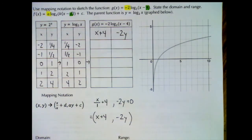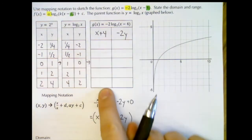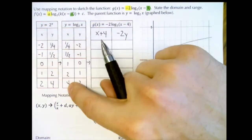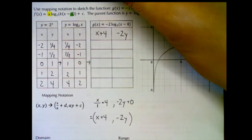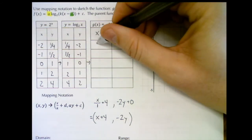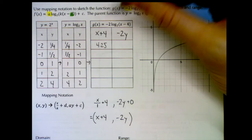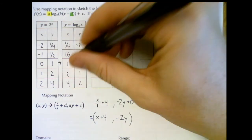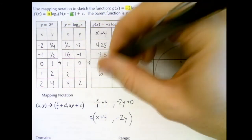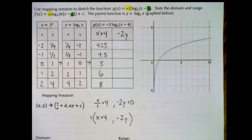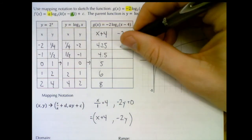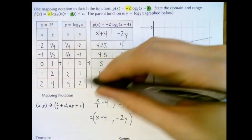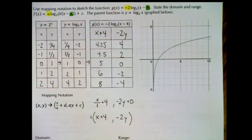To get our new coordinates: add 4 to all x values and multiply all y values by negative 2. Using decimals helps with fractions: 0.25 + 4 = 4.25; 0.5 + 4 = 4.5; 1 + 4 = 5; 2 + 4 = 6; 4 + 4 = 8. For y: negative 2 times negative 2 = 4; negative 2 times negative 1 = 2; 0; 1 times negative 2 = negative 2; 2 times negative 2 = negative 4.